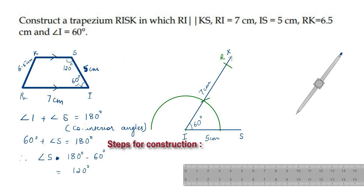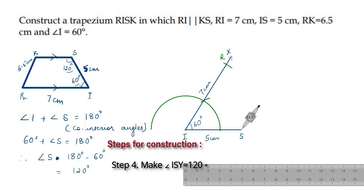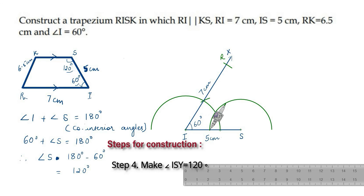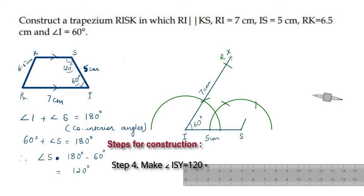Now, angle S is equal to 120 degrees. Open the compass with any convenient radius and with S as center, draw an arc. Place your compass at the point where the arc touches the line and with the same radius, cut the arc at two points. Draw a ray from S passing through this point of intersection. This gives us angle ISY equal to 120 degrees.